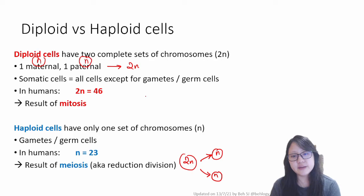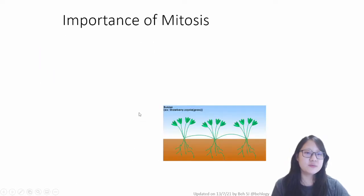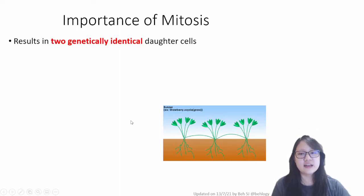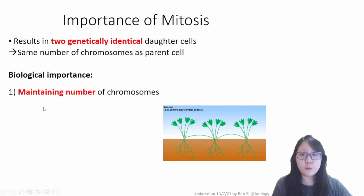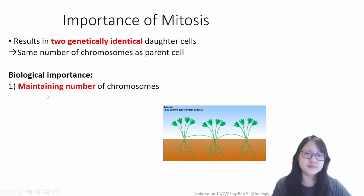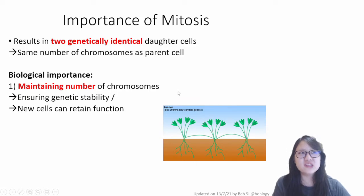Those are two types of cell division. We're going to be learning about mitosis in the next video, and meiosis in a later unit. Now let's talk a little bit more about how important mitosis is. Firstly, mitosis results in two genetically identical daughter cells. This is really important because we want the number of chromosomes to be maintained, and we want the same function and stability for the daughter cells as well as the parent cells — we want daughter cells to do all the things the parent cell can do.